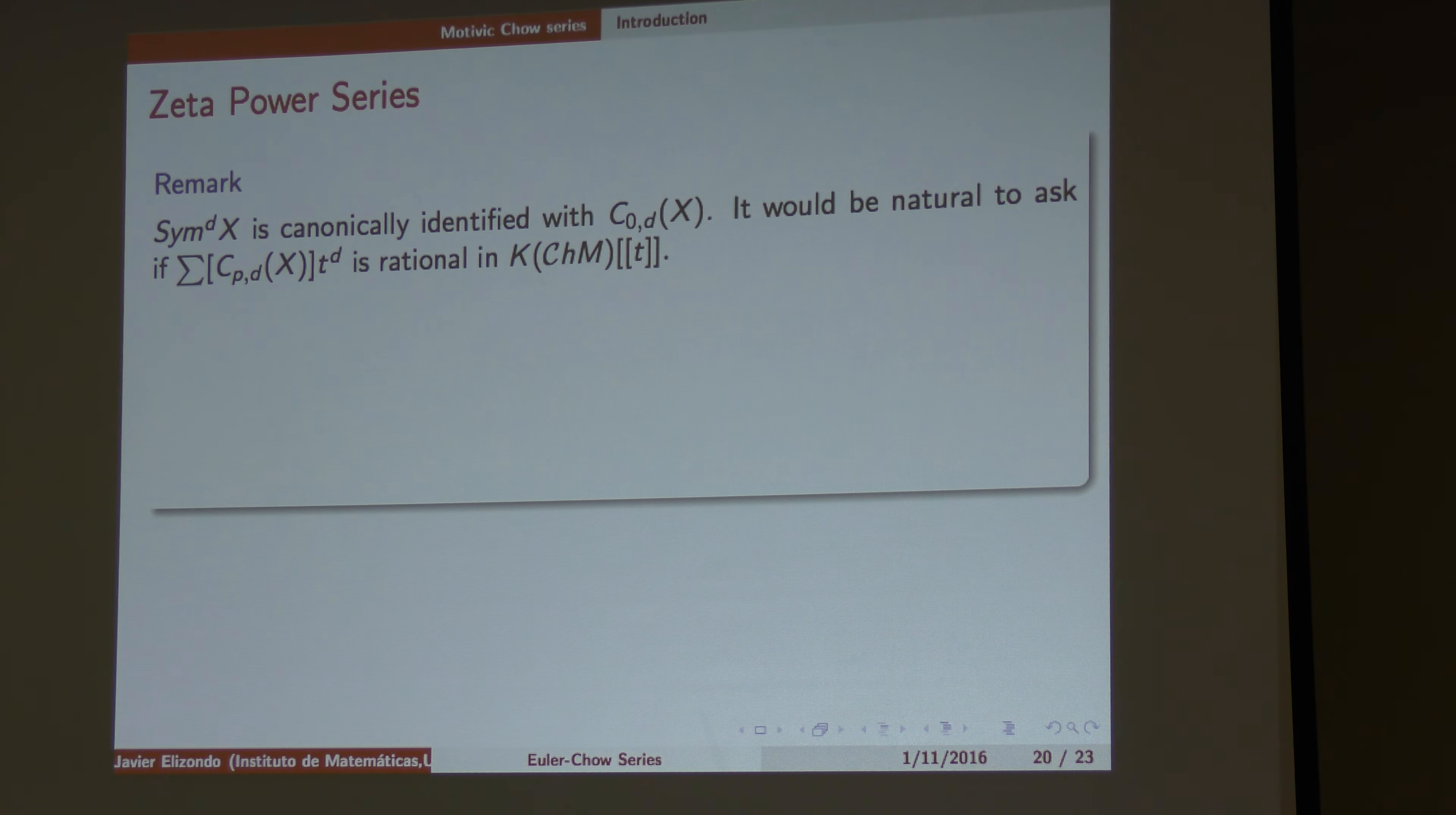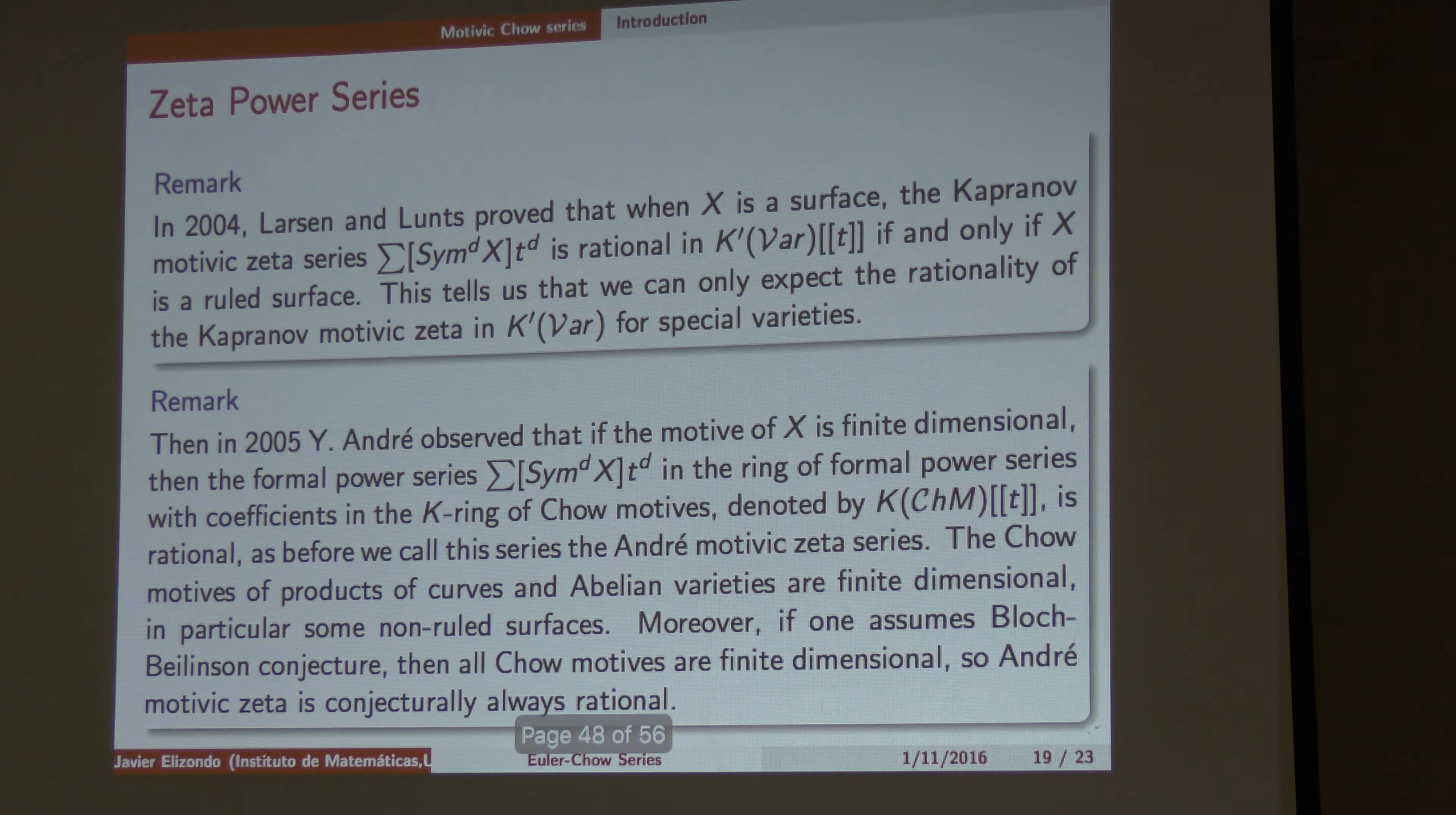So this series generalizes the Kapranov. And it's rational for some surfaces, but the Kapranov is not. So the point is, this thing is precisely a total variety. It can be identified. It is isomorphic to a total variety. So our series, in some way, generalizes this, because we call it for any dimension. This is only dimension zero. Right? This is only for dimension zero. This is the Euler characteristic series for dimension zero. The motivic version of this.